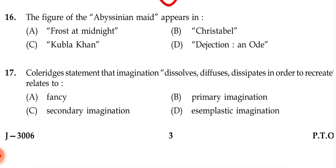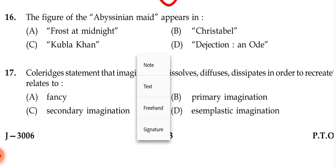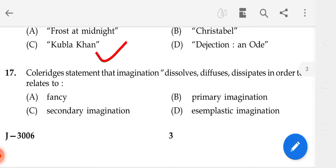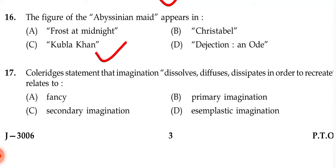The figure of the Abyssinian Maid — it appears in which poem? Options are: A — Frost at Midnight, B — Christabel, C — Kubla Khan, D — Dejection: An Ode. I had forgotten the answer but I think — please verify — it is C, Kubla Khan. I think most of you have read this poem.